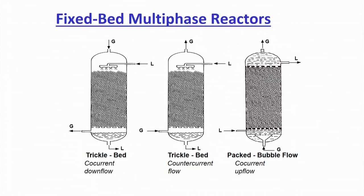For gas-solid or gas-liquid-solid systems, you can use a trickle bed operated co-currently or counter-currently, or a packed bed. In co-current downflow, both gas and liquid are sprayed from the top through the packing. In counter-current operation, gas is injected from the bottom and liquid from the top. The packed bed operates at relatively higher velocities compared to trickle bed. Minimum three choices of contacting are available for a gas-liquid-solid reaction.